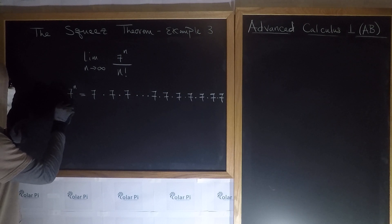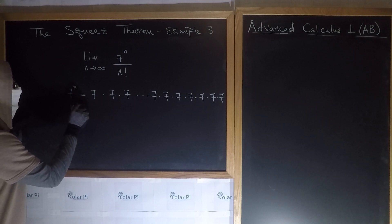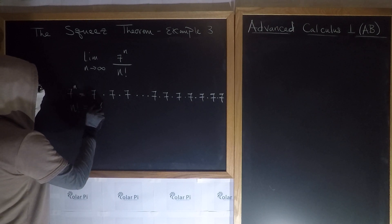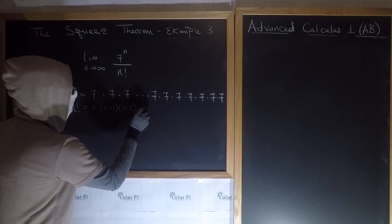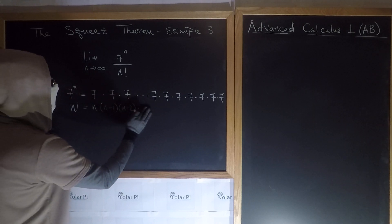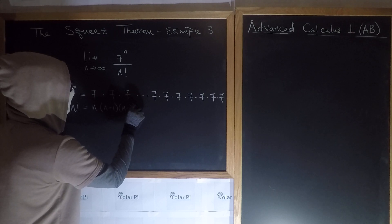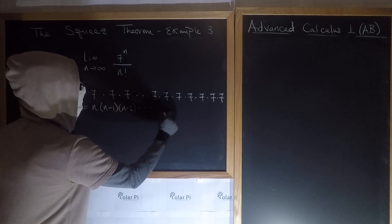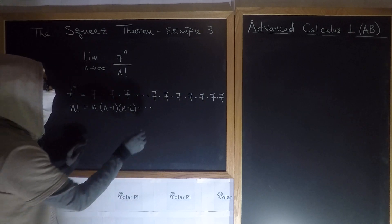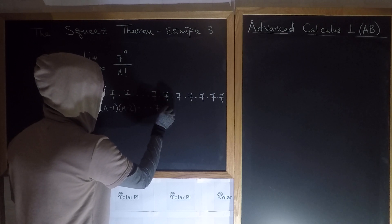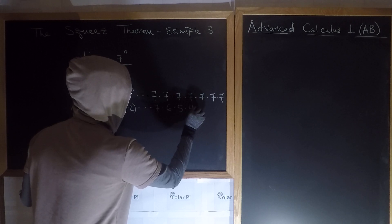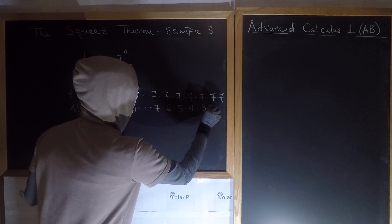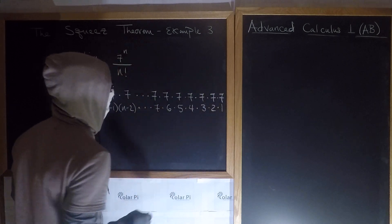And n factorial, we've been through this before, but n factorial is equal to n times n minus 1, dot dot dot. What's the tail end of n factorial going to be? In fact, the last 7 in n factorial, they're going to be 7 times 6 times 5.